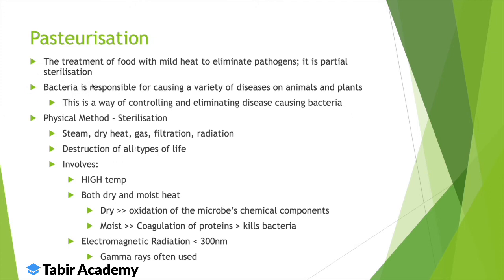We do this because bacteria is responsible for many diseases, so by controlling and eliminating them we can stop people from falling ill. There are two methods: physical and chemical. Physical methods include steam, dry heat, moist heat, radiation, filtration and gas. Dry heat oxidizes the chemical components of microbes, destroying the cell. Moist heat or steam causes coagulation of proteins, killing bacteria because those proteins become non-functional. Electromagnetic radiation such as gamma rays is also used to eliminate bacteria.